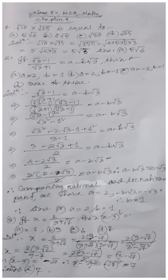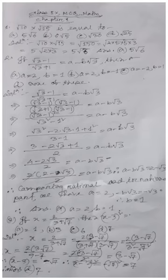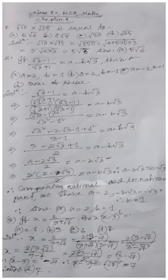x = 2/(3 + √7). To rationalize, we multiply by (3 − √7). So the denominator becomes (3 + √7)(3 − √7), and the numerator becomes 2(3 − √7).